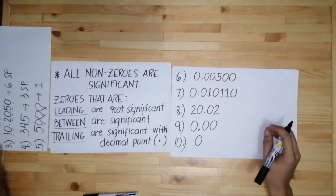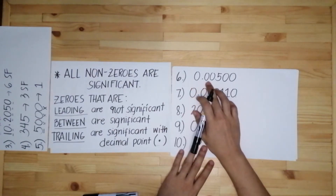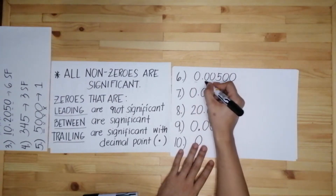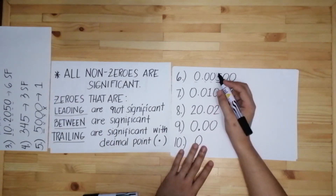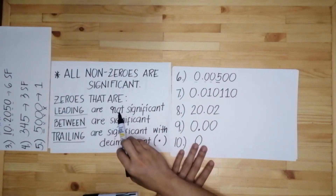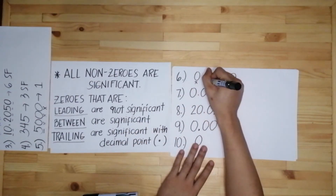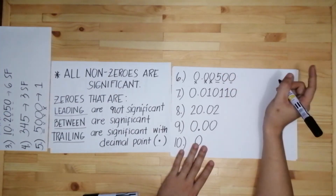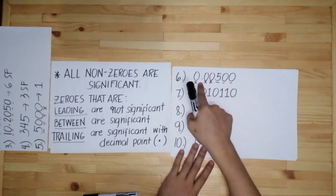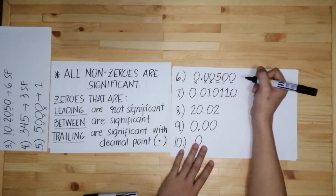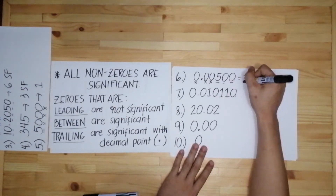Next, let's have number six: 0.00500. We have one five which is automatically a significant figure. Then the three zeros — zero, zero, zero — they are not between any two non-zero numbers; sila ay nasa unahan, so they are leading zeros and automatically not significant. Then we have two trailing zeros at the end. Since there is a decimal point, those two trailing zeros are counted as significant. So all in all, we have three significant figures.